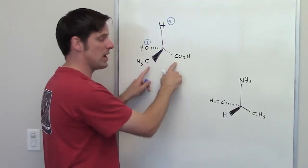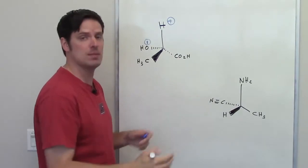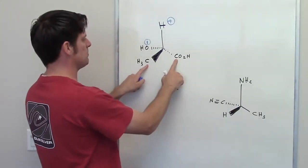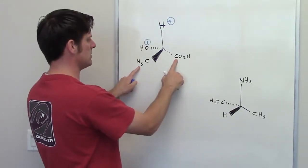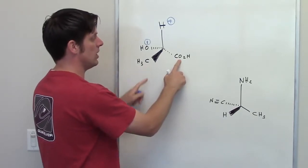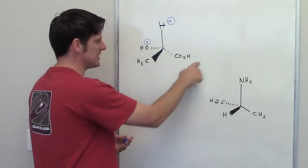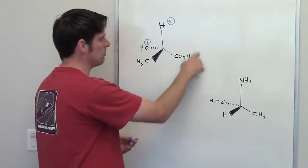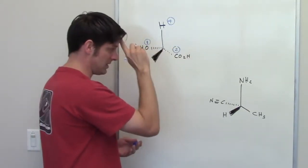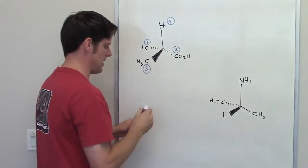Carbon and carbon tie, so I have to go out one more atom until I break the tie. This carbon to the left is bound to hydrogens. This carbon to the right is bound to oxygens. Oxygen has a higher atomic number than hydrogen, which means that this whole branch is second highest in priority, followed by this one which is number three.